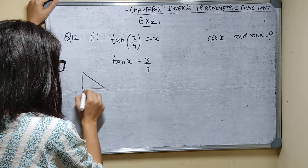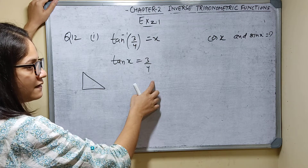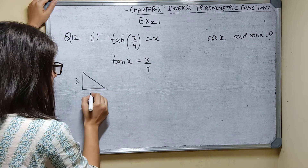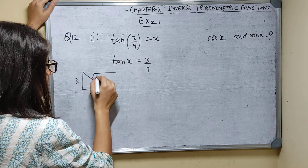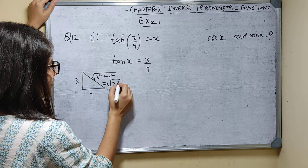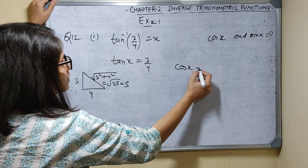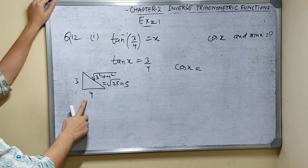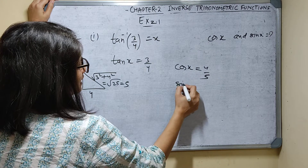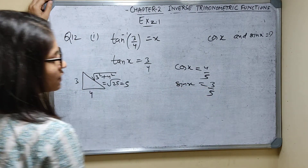Tan x equals 3 by 4, which means perpendicular by base. So perpendicular is 3 and base is 4. The hypotenuse is root of 3 squared plus 4 squared — 9 plus 16 equals 25 — so hypotenuse is 5. Therefore cos x is base by hypotenuse, which is 4 by 5, and sin x is perpendicular by hypotenuse, which is 3 by 5.